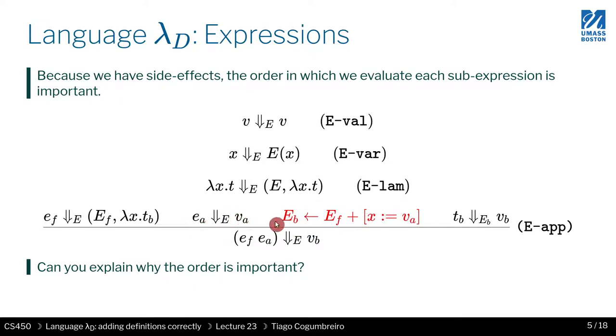It means we're going to have a new environment E of b that results from taking the reference of environment E of f, so the environment of the function, and adding a new binding of x assigned to va. So this new environment E has all the binders in E of f plus this new binder. So if x is in both, you want to take precedence over the new one.